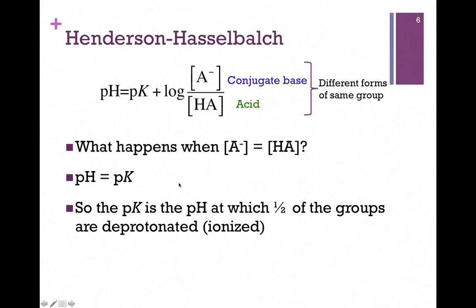So now we have a more practical definition for pK. pK is simply the pH at which half of the groups are deprotonated or ionized. So whenever the pH of a solution is equal to the pK of a molecule or group, it is one-half conjugate base form and one-half acid form.